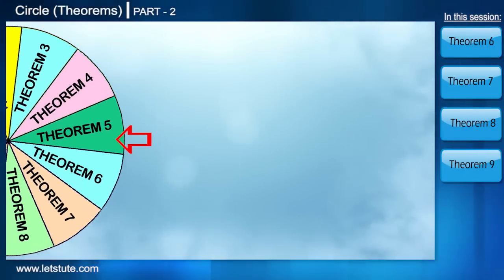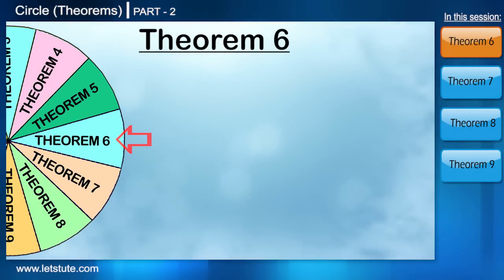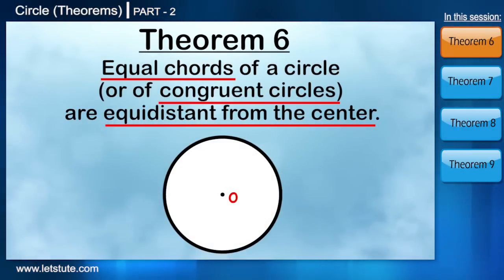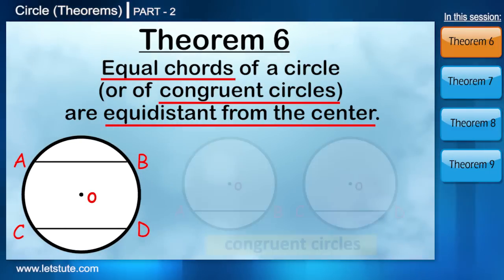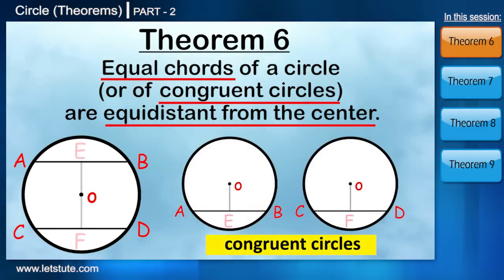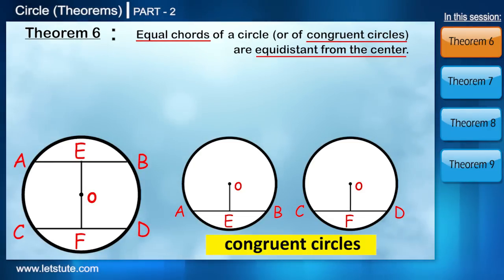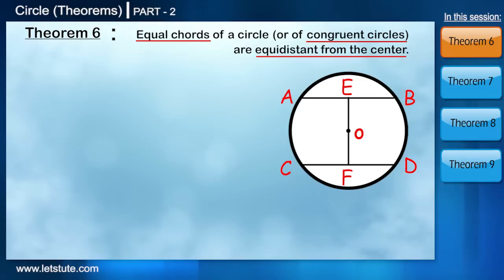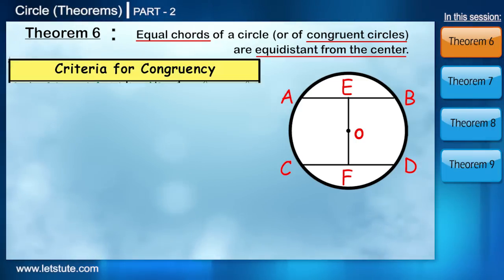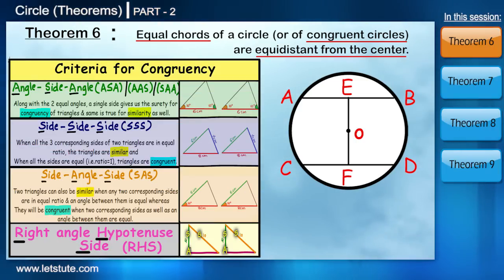Let's have a look at the statement of theorem number six. Equal chords of a circle or of congruent circles are equidistant from the center. So I believe that just by looking at the statement, you must have recognized that this theorem also we will prove using properties of triangles because usually when you have to prove some angle or some segment congruent, try to fit them in a triangle and prove that the triangles are congruent.